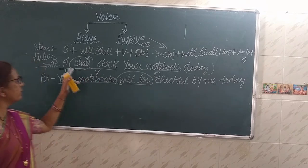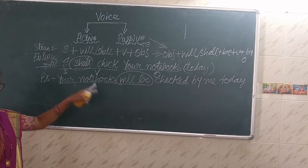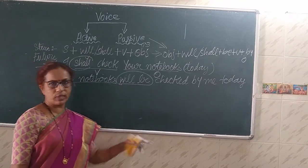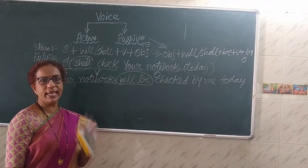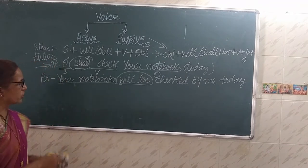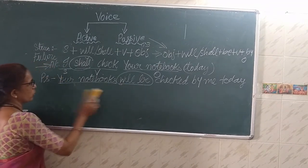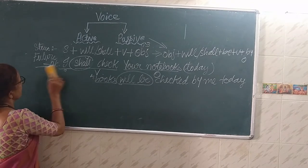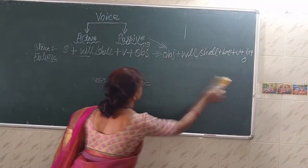Please keep in mind: 'shall' goes only with 'I' and 'we,' and that remains in passive as 'shall be.' Otherwise, 'will be' goes with all subjects — I, you, we, they, he, she, it. So this is the passive construction in future tense.